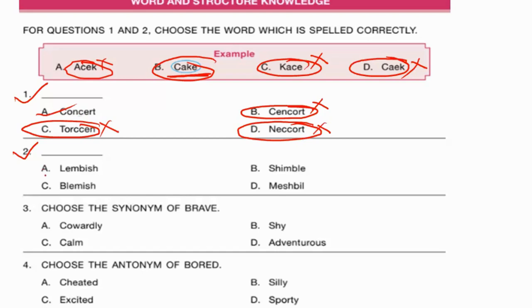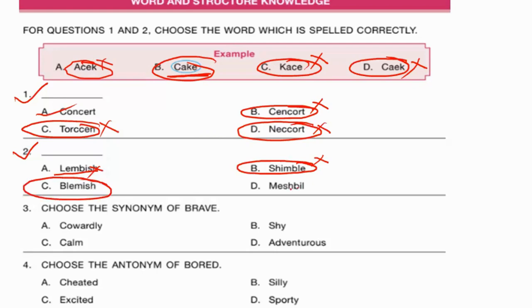For question two of the correctly spelled words: 'lambish' — no such word. 'Shimble' — no such word. 'Blemish' — yes, blemish means a mark that spoils the look of something. Check the spelling: B-L-E-M-I-S-H — correct. 'Meshbills' — no such word. So the correct answer is option C, blemish.